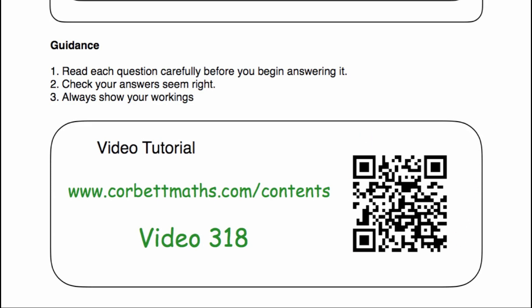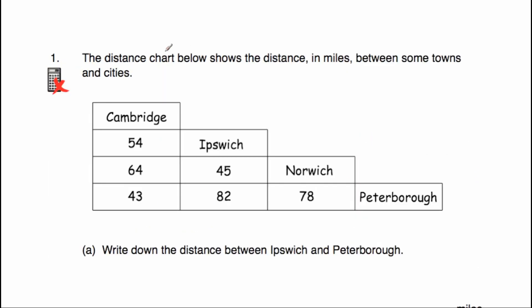Let's get started. Question number one says the distance chart below shows the distances in miles between some towns and cities. So we've got Cambridge, Ipswich, Norwich and Peterborough, and we've got the distances in miles.